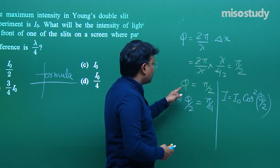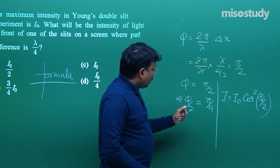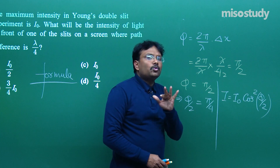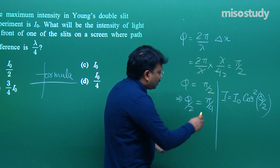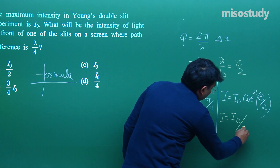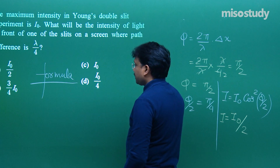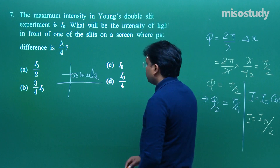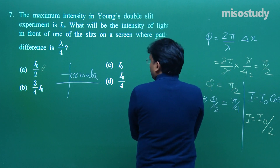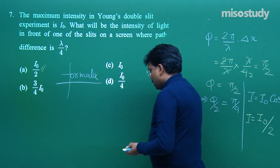Putting φ/2 = π/4 (i.e., 45°): cos 45° = 1/√2, and (1/√2)² = 1/2. So I = I₀ × (1/2) = I₀/2. That is the answer. This is the particular approach. The solution in front of you is complete.